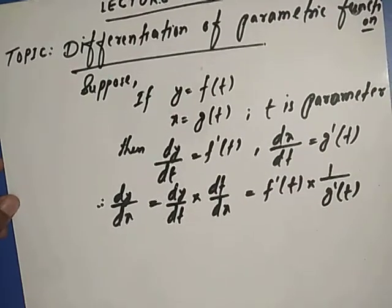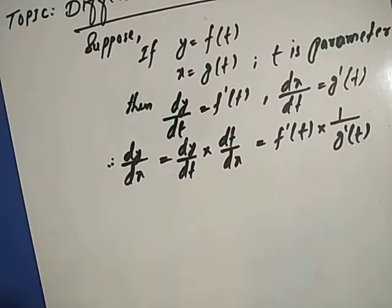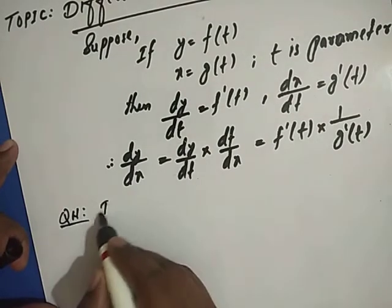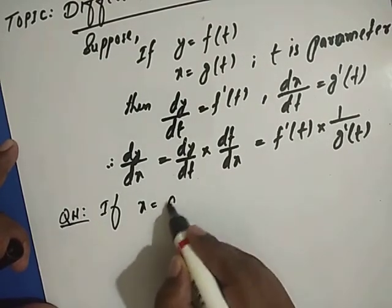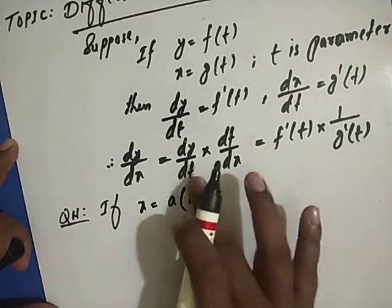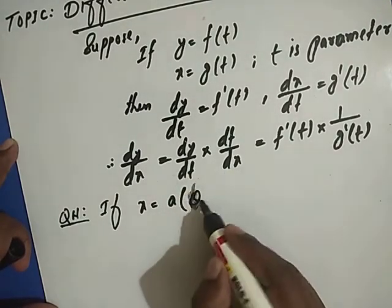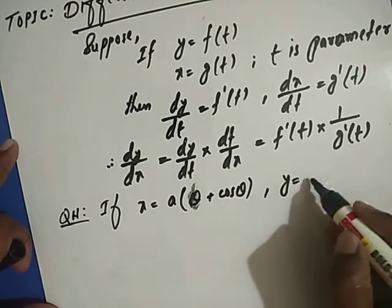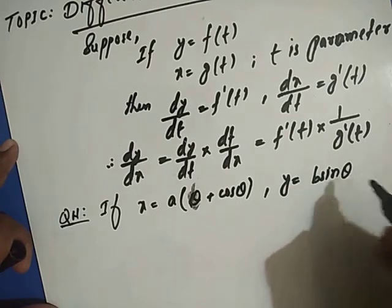Now let's look at a problem. Question: If x equals a times (theta plus cos theta) and y equals b sin theta, then find dy by dx.